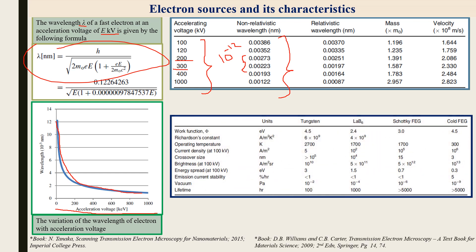The slide shows the difference between thermionic emission and field emission sources. For thermionic emission, tungsten and lanthanum hexaboride guns are used. Older TEM systems use tungsten guns, and newer TEMs mostly use lanthanum hexaboride. Advanced TEM systems with STEM capabilities and monochromators use Schottky FEG and cold FEG sources.